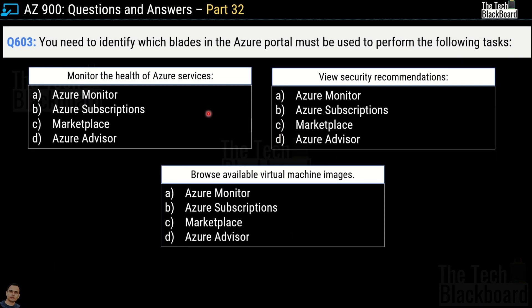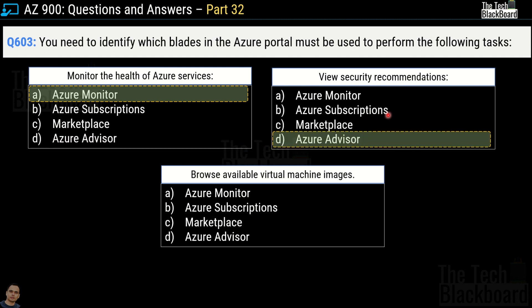Question 603 asks which Azure portal blades to use for specific tasks. To monitor the health of Azure services, use Azure Monitor. To view security recommendations, the correct answer is option D, Azure Advisor. To browse available virtual machine images, the answer is option C, Marketplace.